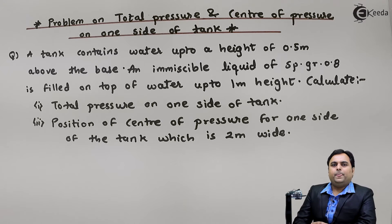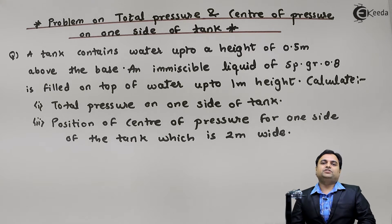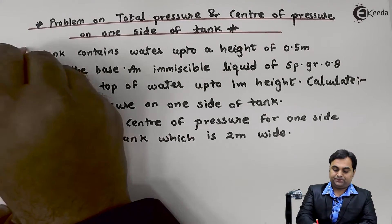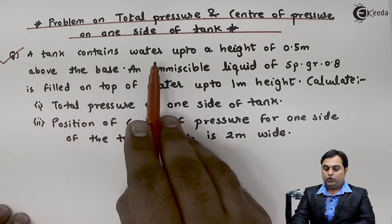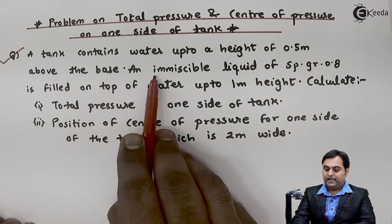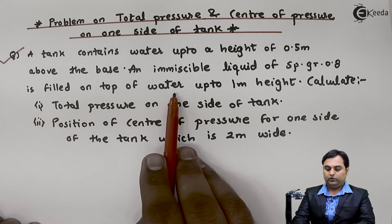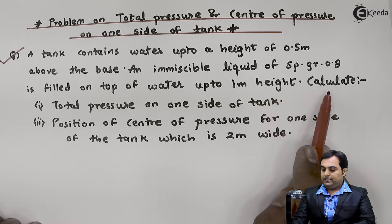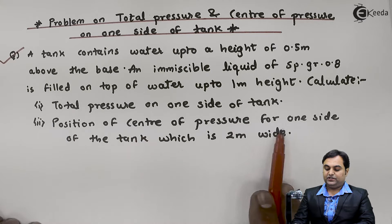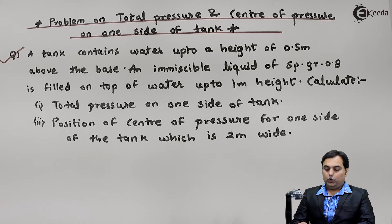Hello friends, here we have a problem in which we would be calculating the total pressure and center of pressure acting on one side of a vertical tank. A tank contains water up to a height of 0.5 meter above the base. An immiscible liquid of specific gravity 0.8 is filled on top of water up to 1 meter height. Calculate total pressure on one side of the tank, and the position of center of pressure for one side of the tank which is 2 meters wide.